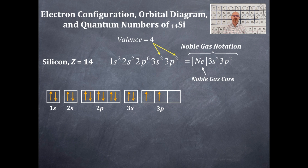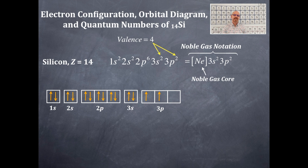However, we're not done with this problem. The other question is: is this paramagnetic or diamagnetic? You should be able to figure that out from here. Paramagnetic has unpaired electrons and is attracted to a magnetic field — most elements are. There are only a few elements which are diamagnetic, and they would rather not be in a magnetic field. Silicon is paramagnetic because it has at least one unpaired electron — it has two unpaired electrons.